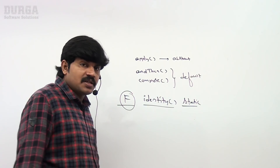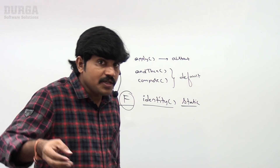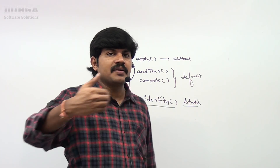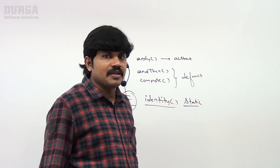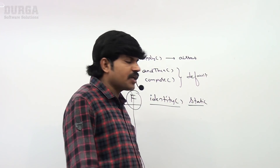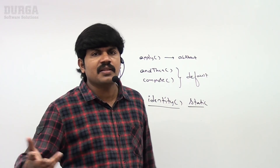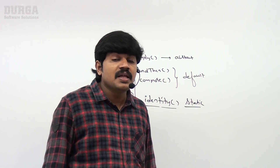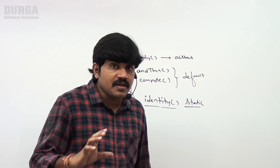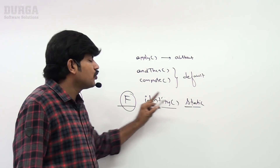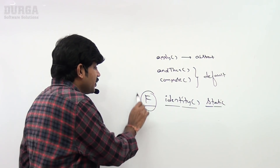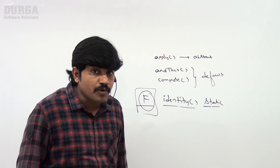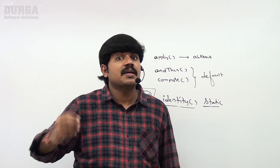The specialty of this function is that whatever input you are giving, this function is always going to return the same input as the return value. Identity means: can you please return the same thing? Very rarely will people use this, but just be aware there is one method — the identity method — which is a static method that returns a function whose output always equals its input.